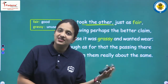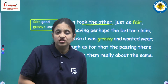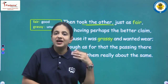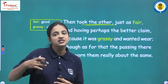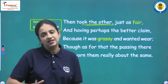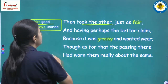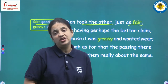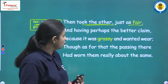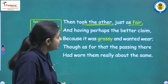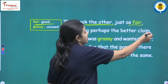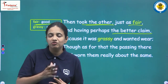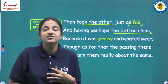He felt the second road had 'perhaps the better claim' — meaning it might give better results in the future. The reason he felt this way was that the second road was grassy. Grassy means unused — in a forest, a road with more grass has been walked on by fewer people, as frequent footsteps damage the grass.